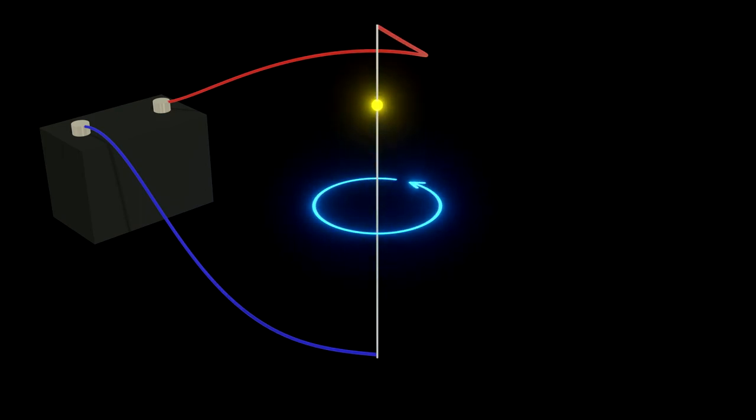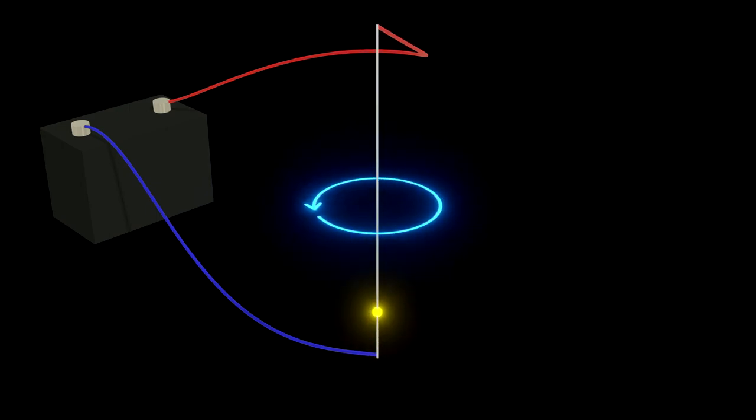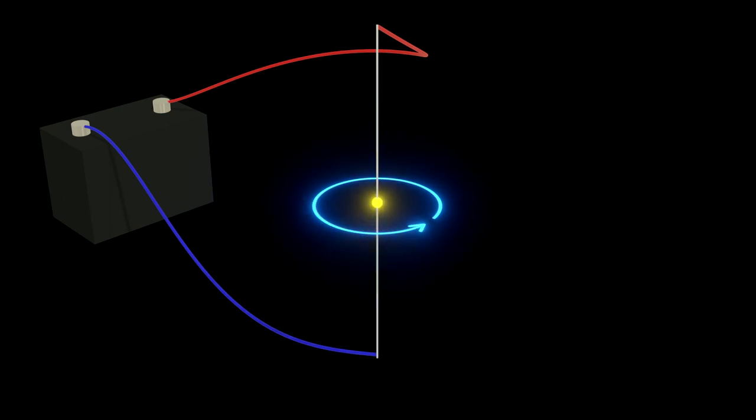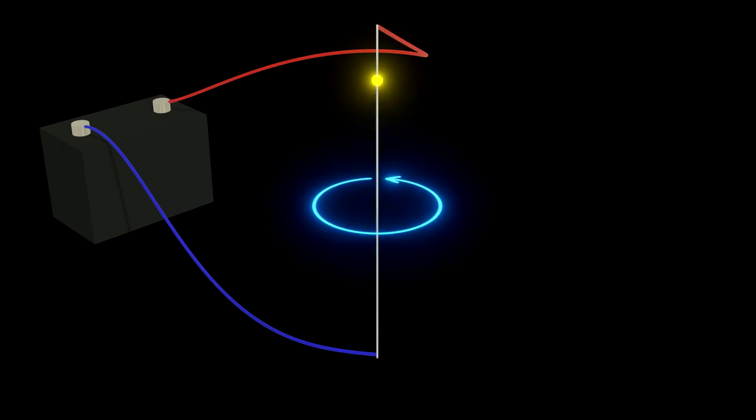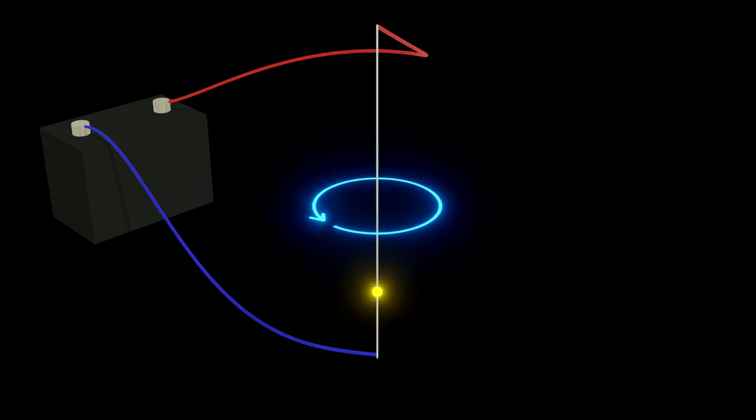To find the direction of the magnetic field lines, give your screen a thumbs up with your right hand. The direction in which your thumb is pointing is the direction of current and the direction in which your fingers are bent is the direction of the magnetic field lines.